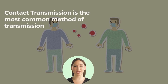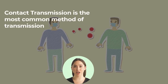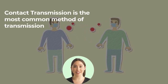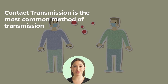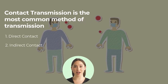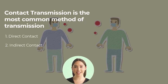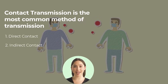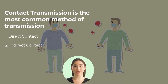Contact transmission is the most common method of transmission. It is divided into two subgroups: direct contact and indirect contact. Direct transmission occurs when germs are transferred from one infected person to another person without a contaminated intermediate object or person.